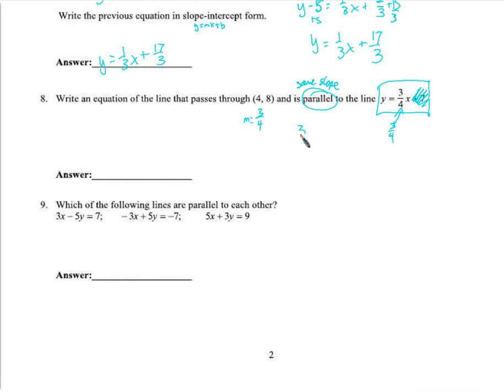All right. We know the slope is 3 fourths. Okay. 3 fourths x. Well, x is 4 in this case. Plus b equals 8. Right. Y equals m times x plus b. So, now I solve for b. 8 equals 3 plus b. b equals 5. y equals 3 fourths x plus 5.